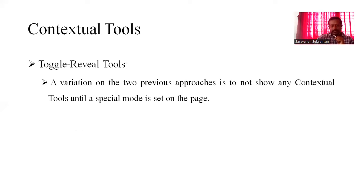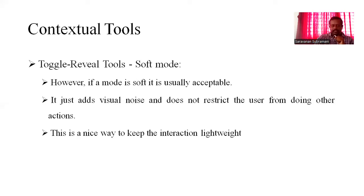The toggle reveal tool is a variation of the two previous approaches: not showing any contextual tool until a special mode is set on the page. A soft mode should be available. If the mode is soft, it is usually acceptable — it just adds the usual noise without restricting the user from doing other actions. This is a nice way to keep the interaction lightweight.